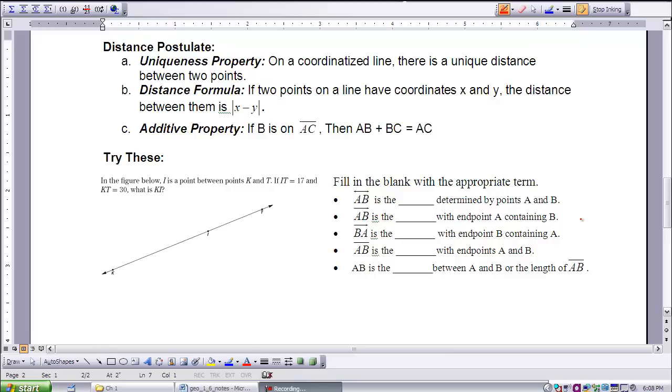And then in part B, we have the distance formula. We discussed that earlier in this chapter, and if two points on a line have coordinates X and Y, the distance between them is the absolute value of X minus Y. The third part is called the additive property, and it states, if B is on AC, then the distance from AB to BC is the same as the total A to C.